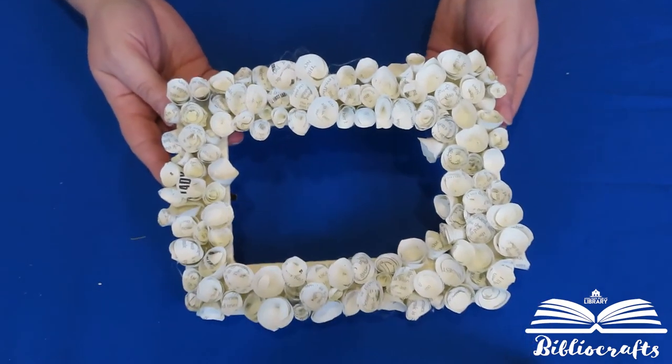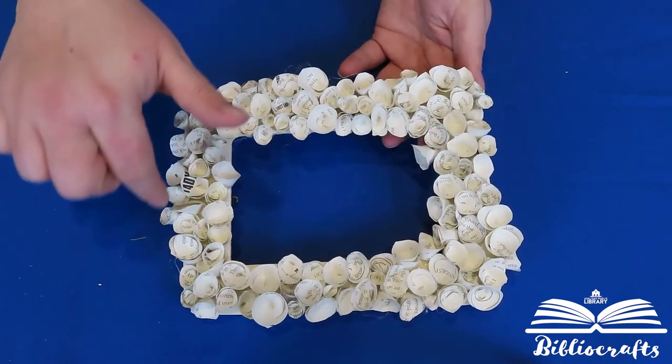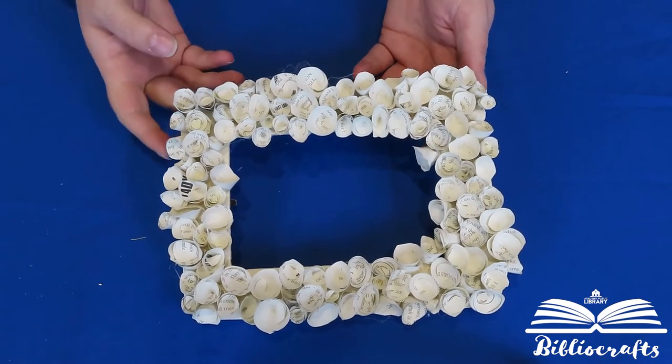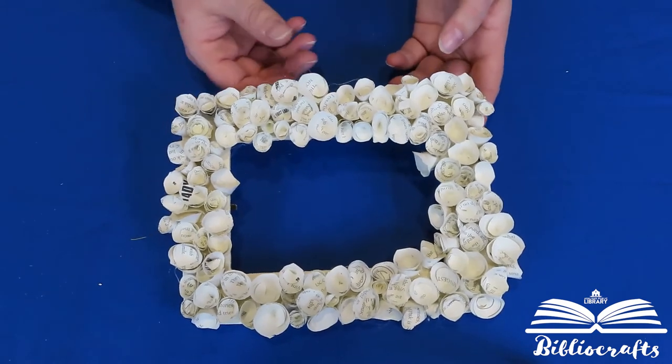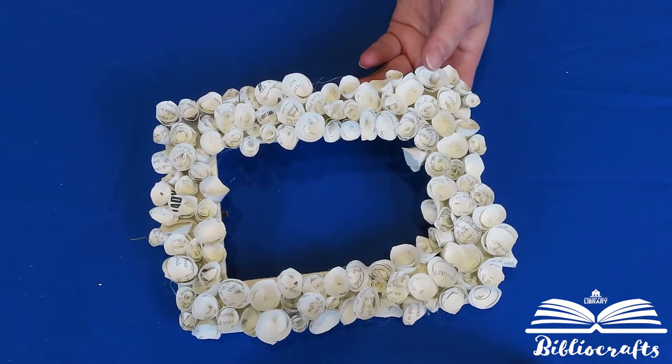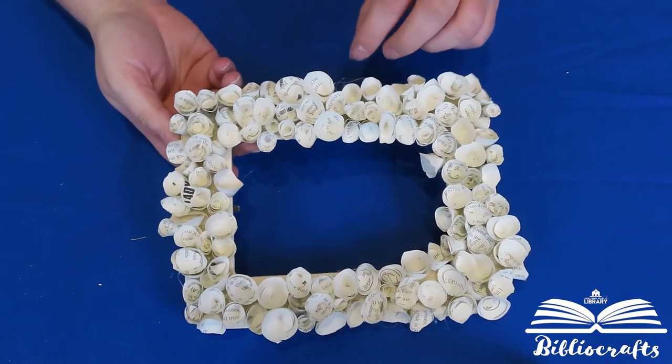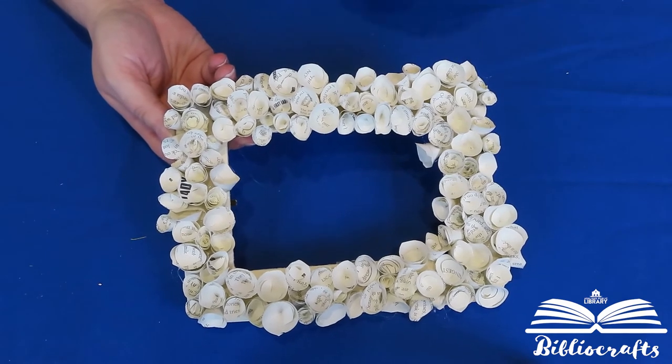If you want you can leave it like this, you could take some watercolors and paint your little flowers if you wanted them to have a little pop of color. We'll peel some of our little stringies off from our hot glue gun.